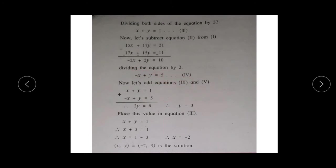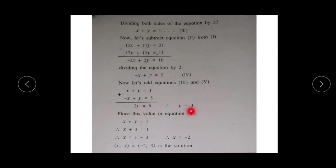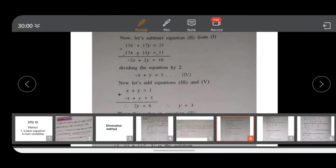Equations 3 and 4 are now simple. The coefficients of x and y are the same; signs of y are the same and signs of x are different. Adding equations 3 and 4: x + y = 1 and -x + y = 5. The x terms cancel, giving 2y = 6, so y = 3. Substituting y = 3 in equation 3: x + 3 = 1, so x = 1 - 3 = -2. Therefore, the solution is (-2, 3).